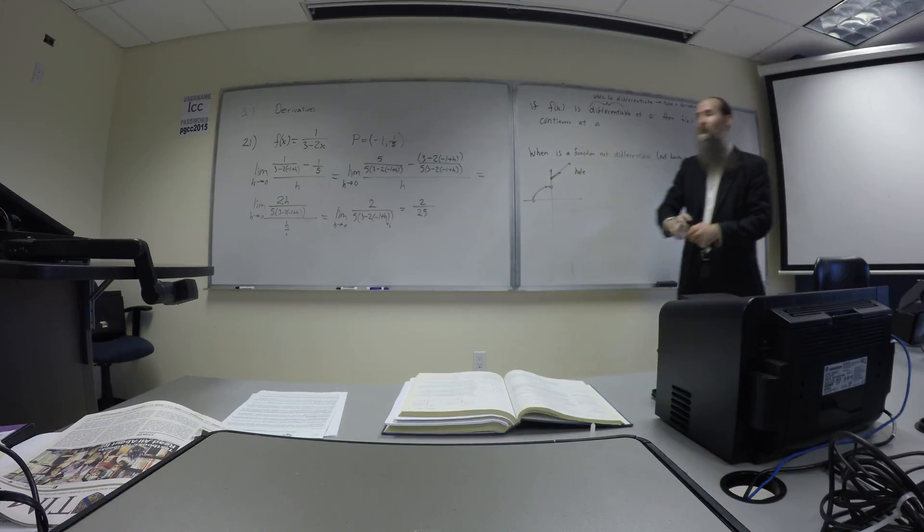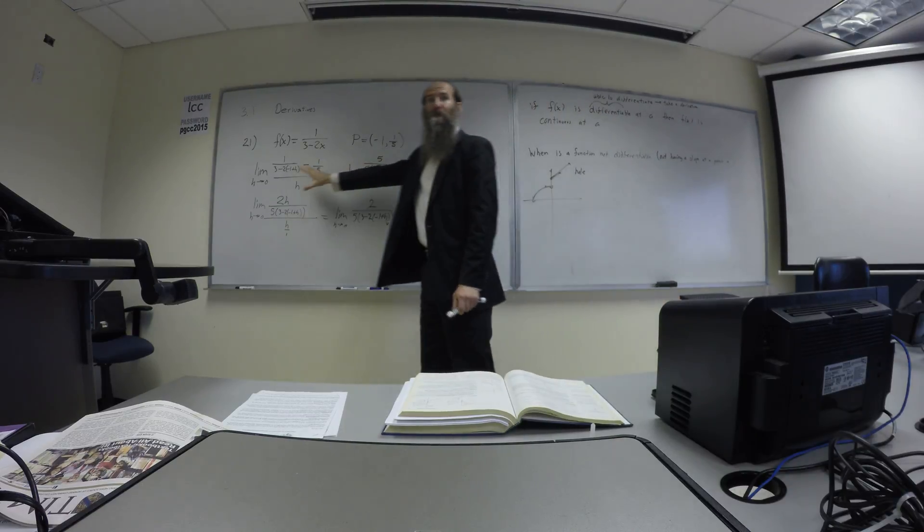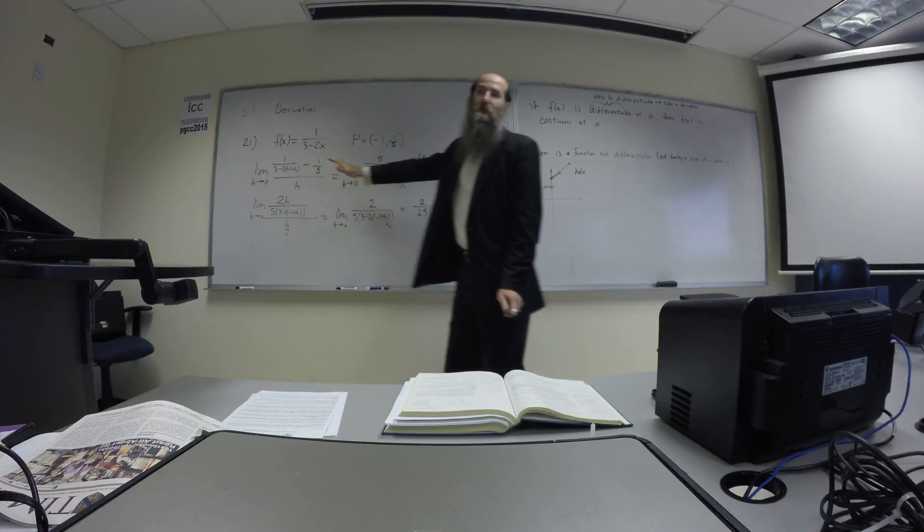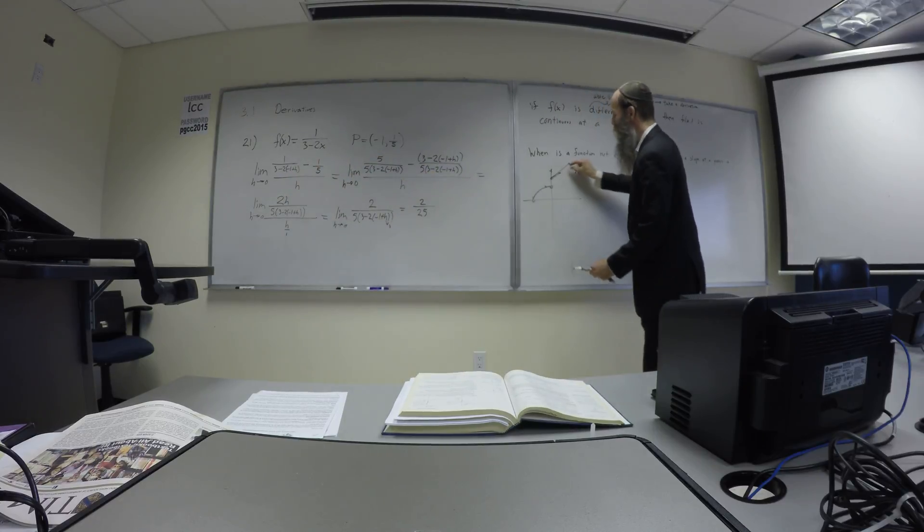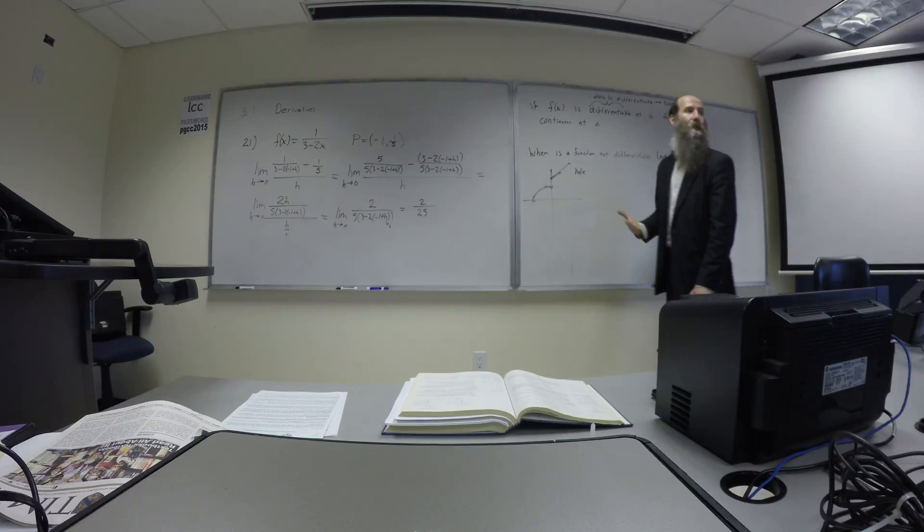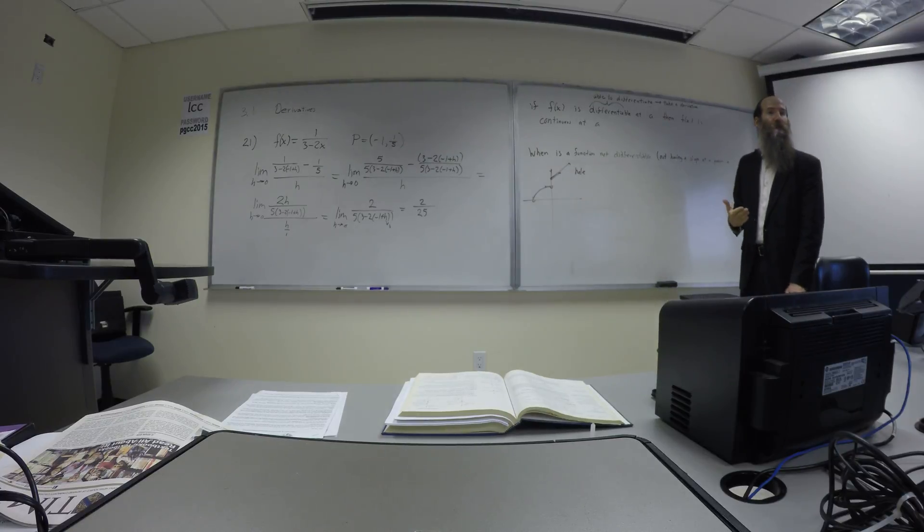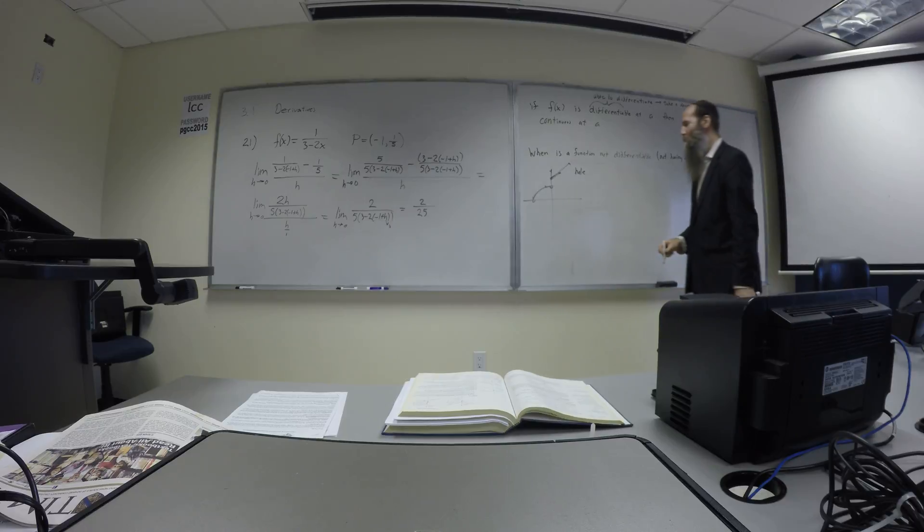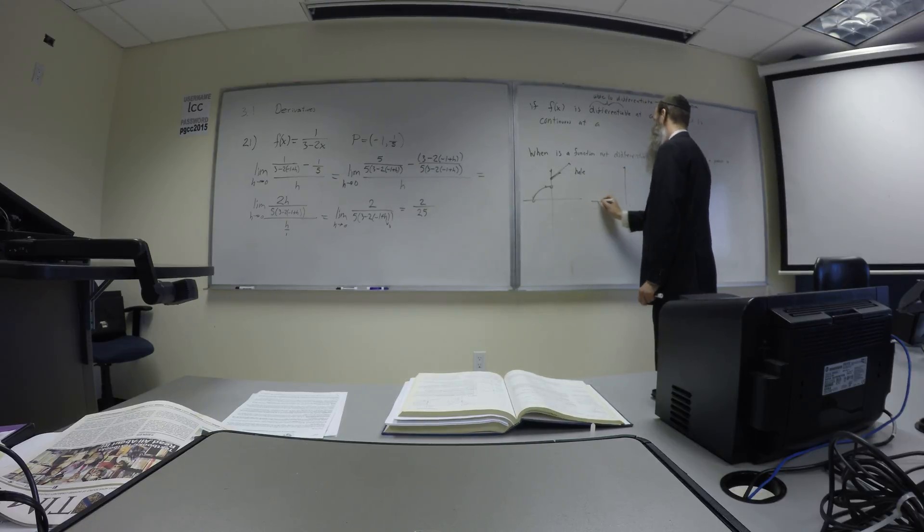Therefore, the limit overall, meaning, when I say limit, I mean the limit definition of derivative now. Right? Would not exist. Because it's talking about where are these slopes approaching. The slope that approaches from the left is approaching, I guess, zero. And the slope approaching from the right is approaching, I guess, about one. Since they are not the same, the overall limit for the derivative does not exist. So the derivative does not exist there. Okay? A hole. Very classic.